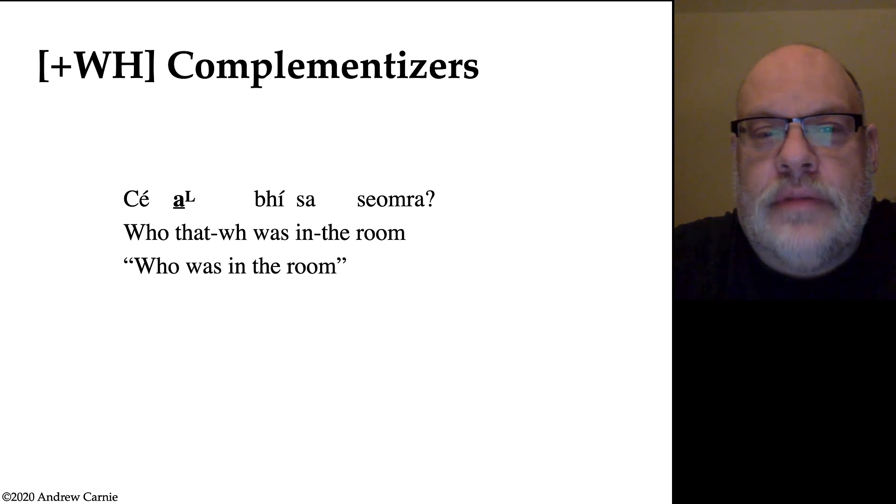So what kind of evidence do we have that there are, in fact, complementizers that are plus WH? Well, you'll recall when we talked about T to C movement, we talked about how Irish has special complementizers you use in yes-no questions. Well, guess what? You have special complementizers you use in WH questions, too. In the sentence, who is in the room, ke a vi sa shomra, we have this special particle that is used only in WH questions and related constructions, like relative clauses, which we will talk about a little bit later. As an aside, this L here is not pronounced. It's an indicator of a particular kind of consonant mutation. Nevertheless, the point of this is it is, in fact, a complementizer that shows up in precisely WH constructions.